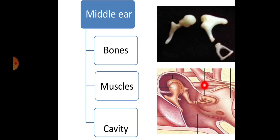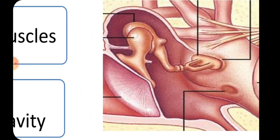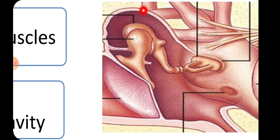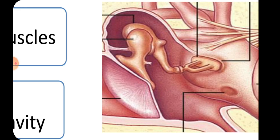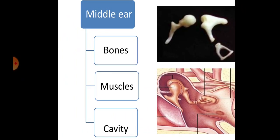The middle ear is a cavity — a box-like structure made up of walls. It has a superior wall, an inferior wall, a lateral wall formed by the tympanic membrane, a medial wall formed by the vestibule or internal ear, a posterior wall, and an anterior wall. In the diagram, the anterior wall has been cut and removed for viewing.